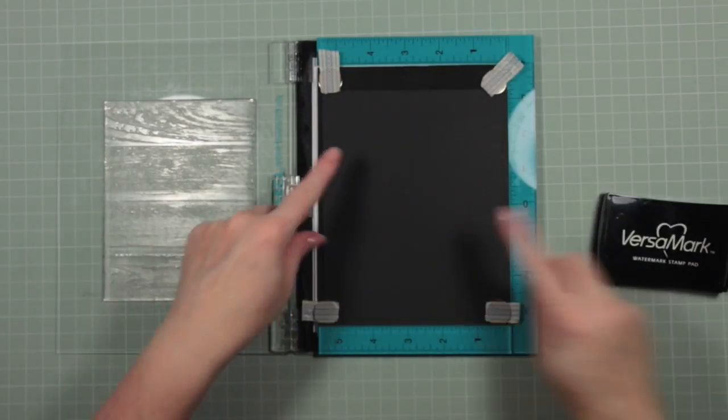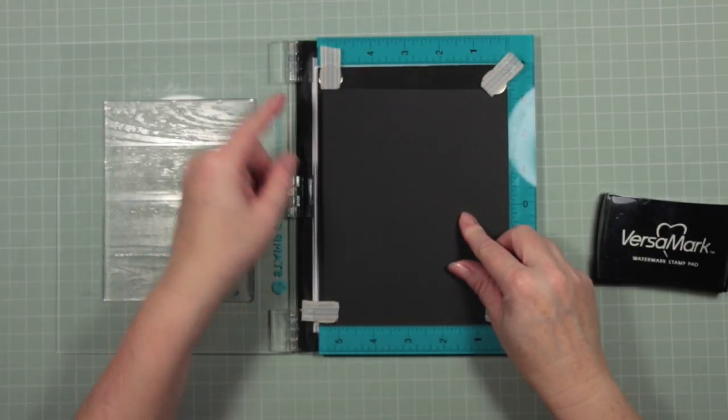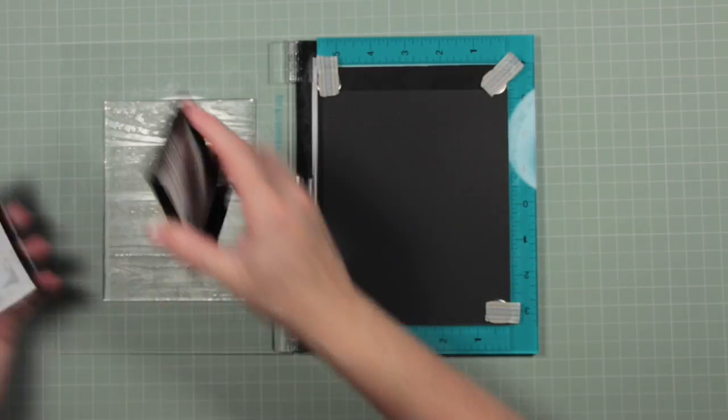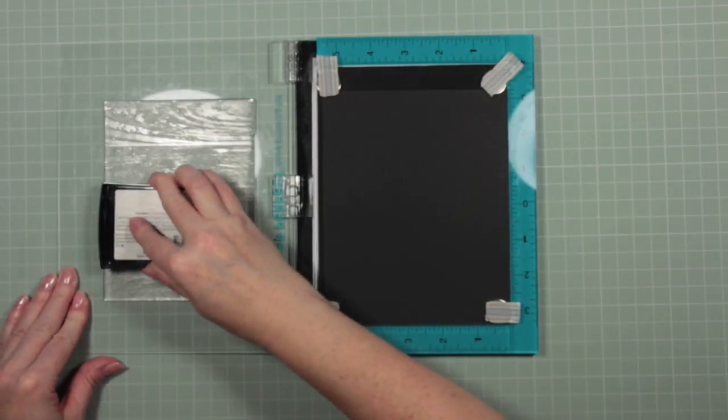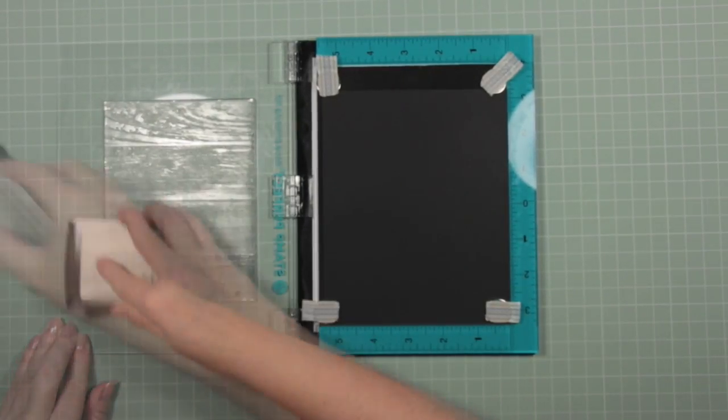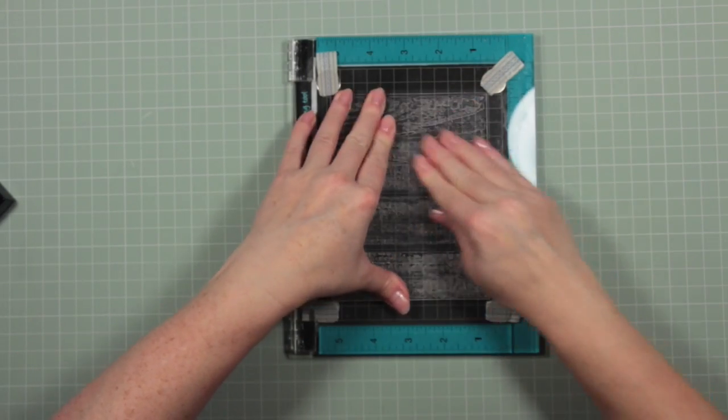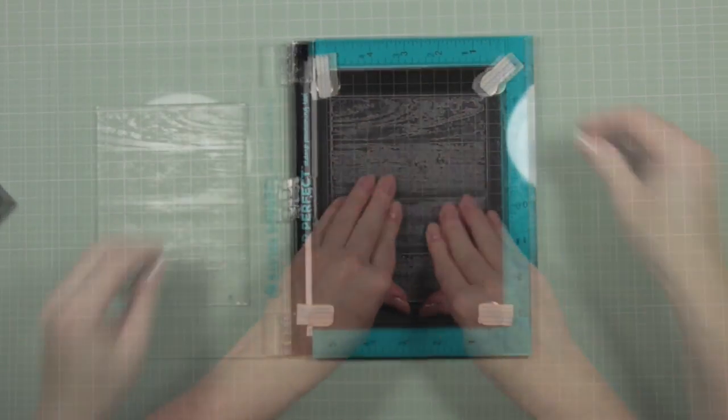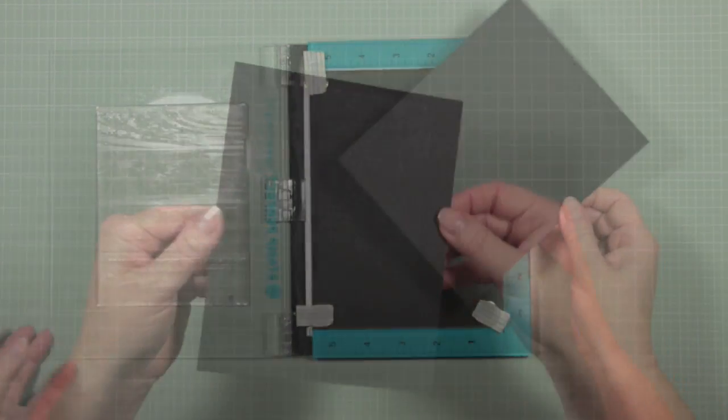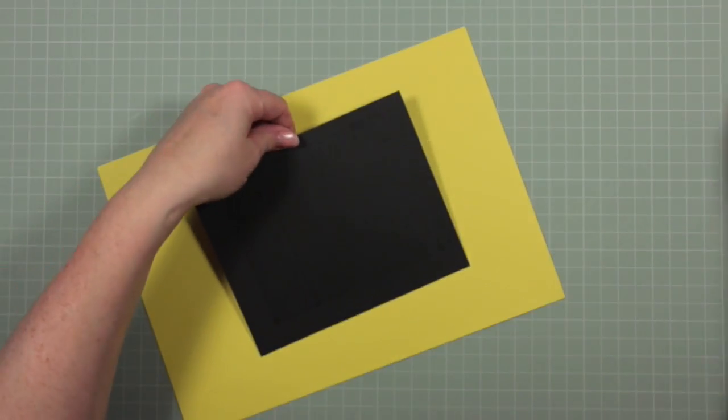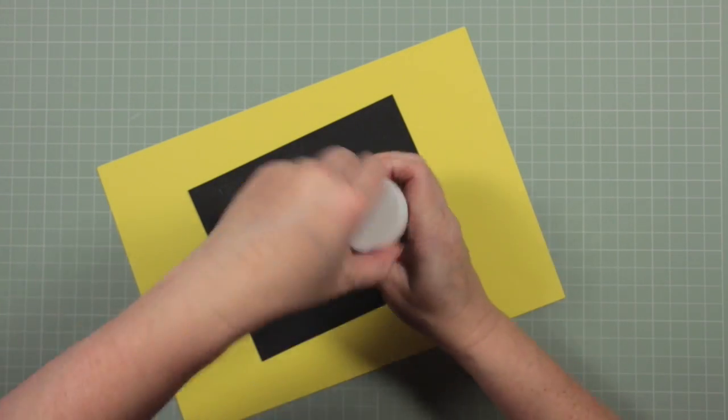So I have a wood effect background stamp and I'm going to ink this up using my Versamark ink pad and I'm using my stamp positioning tool to help me with this because it's quite a large stamp. I'll ink it up and stamp it a couple of times and when I'm happy with the ink saturation I will cover it with embossing powder.